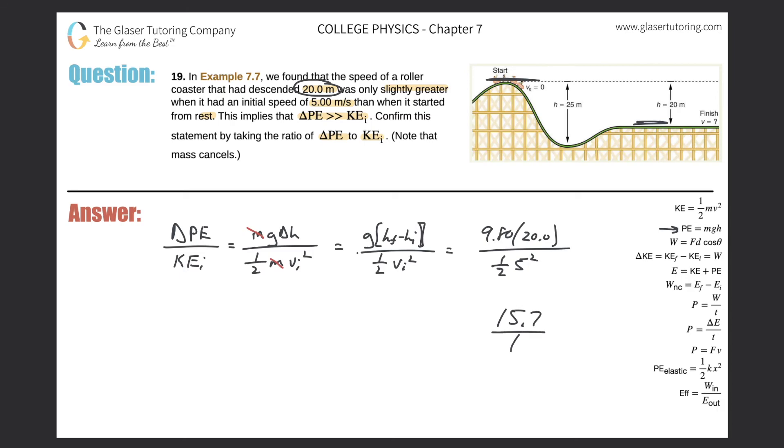15.7, basically over 1. So what that's telling you is that the change in potential energy is 15.7, almost 16 times greater than the initial kinetic energy, which makes this true. That the change in potential energy is significantly greater. How much greater? 16 times greater.